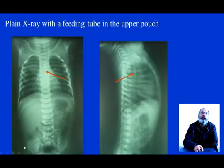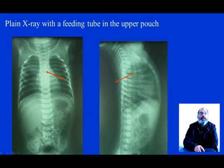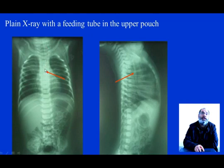Here are examples of plain X-ray of a patient with oesophageal atresia. Plain X-ray is very important for the diagnosis and can give us precious information. The plain X-ray with the feeding tube in the upper pouch will confirm the diagnosis. You can see the gastric tube arrested in the mediastinum with a posterior projection, which confirms oesophageal atresia.